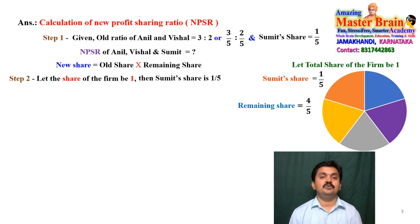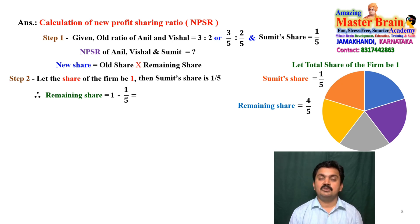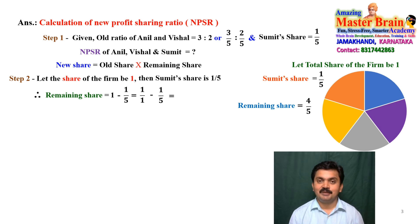After finding the remaining share, we apply the formula. The remaining share equals the total firm share minus Sumit's share: 1 minus 1/5. Writing 1 as 1/1, we take the LCM, which is 5. So this becomes 5/5 minus 1/5.